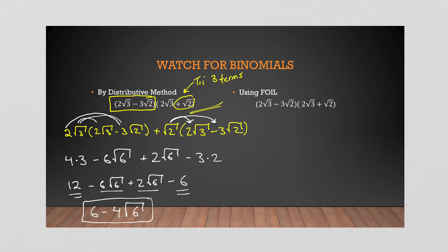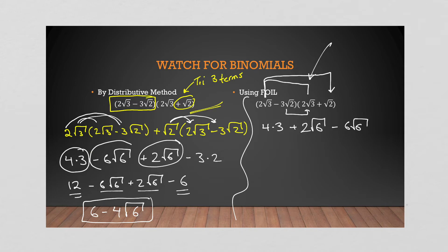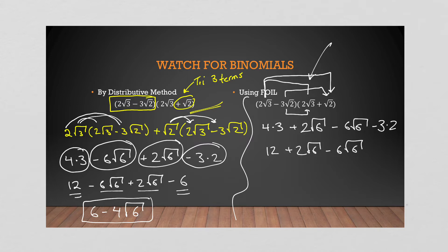When you have two binomials like this, we can also use good old-fashioned FOIL. First: two times two is four, and root three times root three is three — that gives us twelve. Outside: two root three times two gives us plus two root six. Inside: gives us minus six root six. Last: negative three, and root two times root two times two gives us minus six. Naturally we end up with the same solution. FOIL is definitely more straightforward when we have two binomials: six minus four root six.